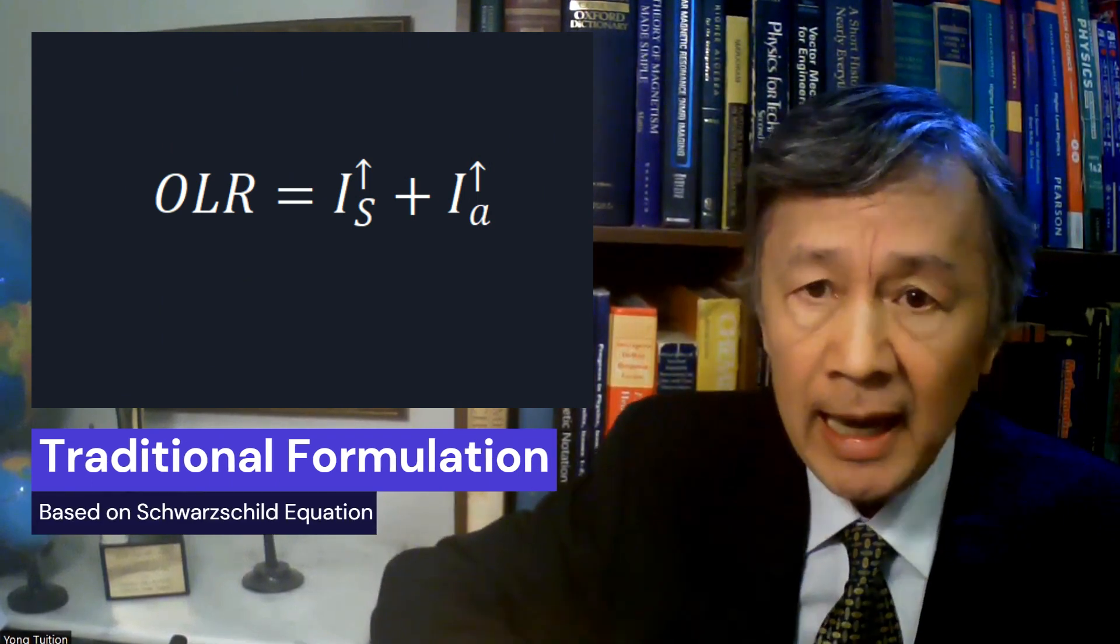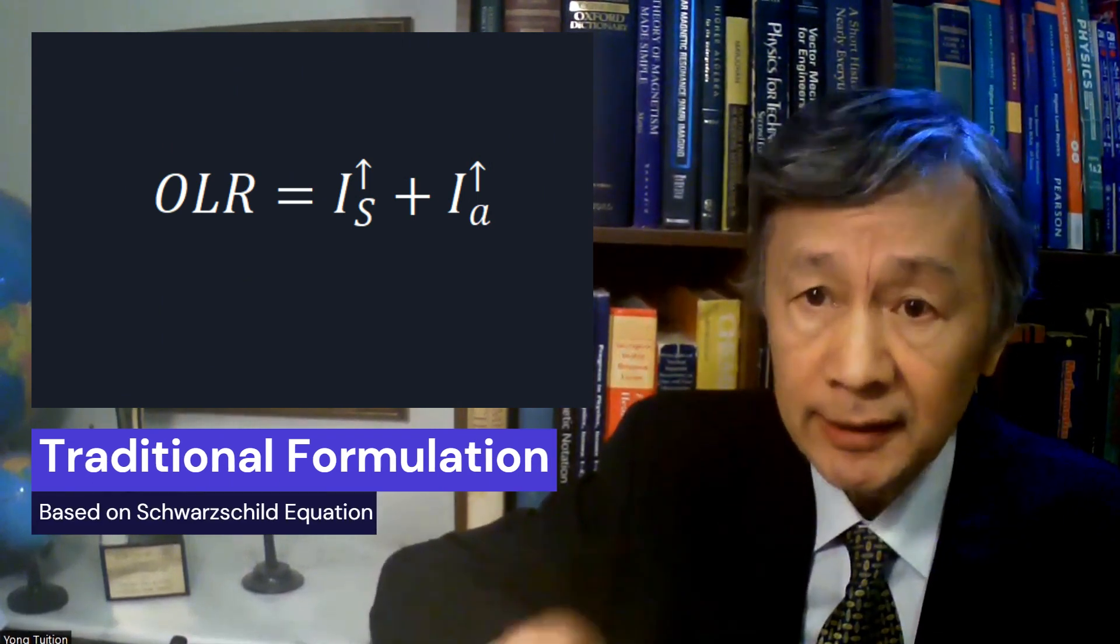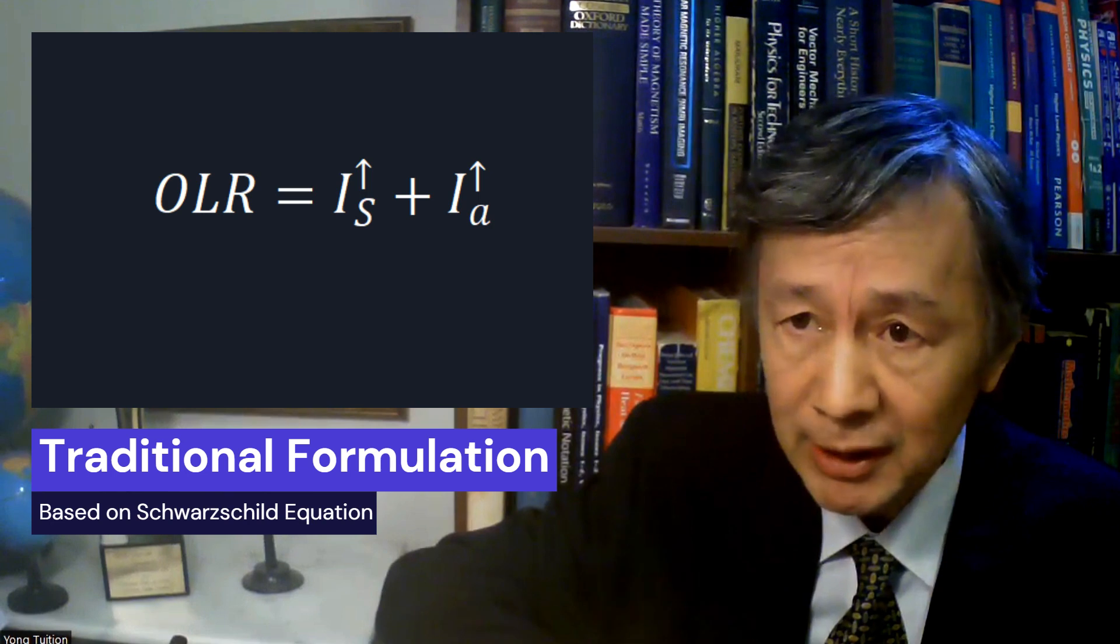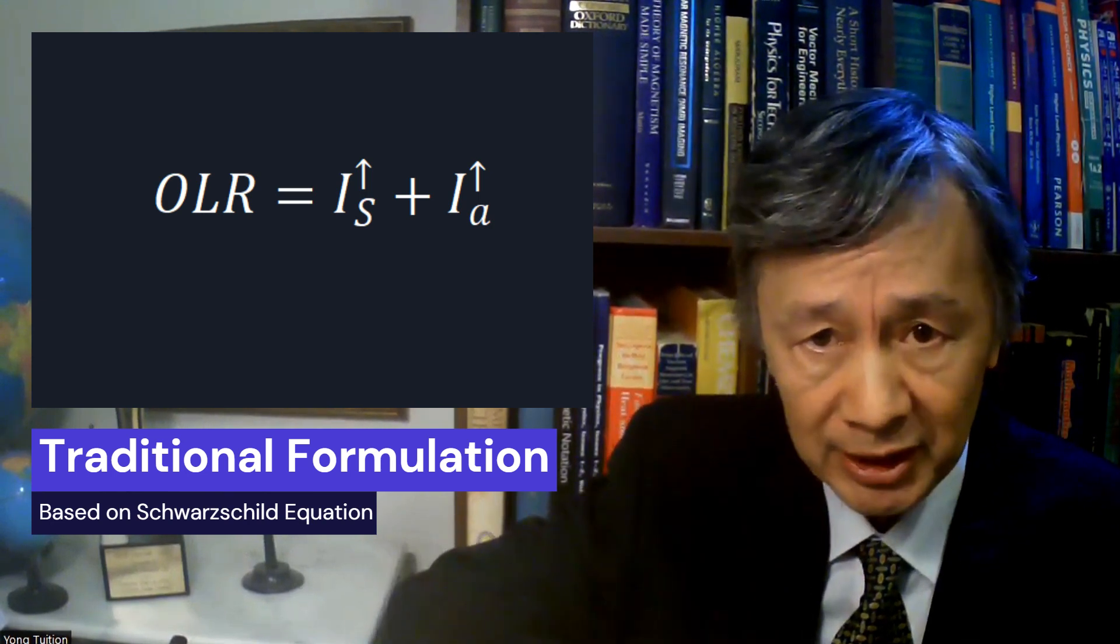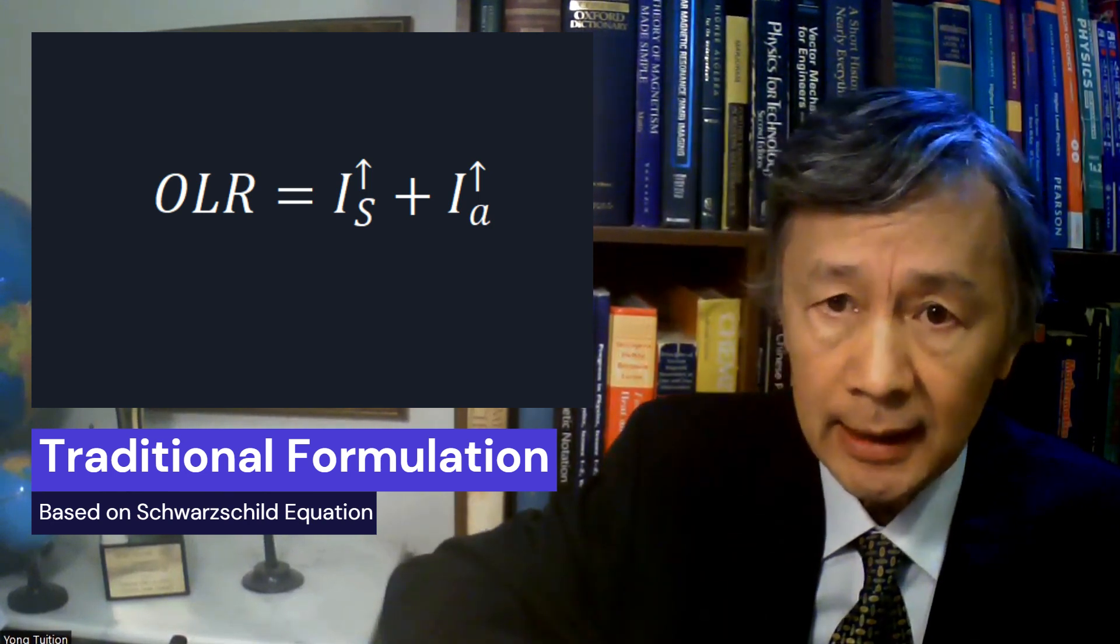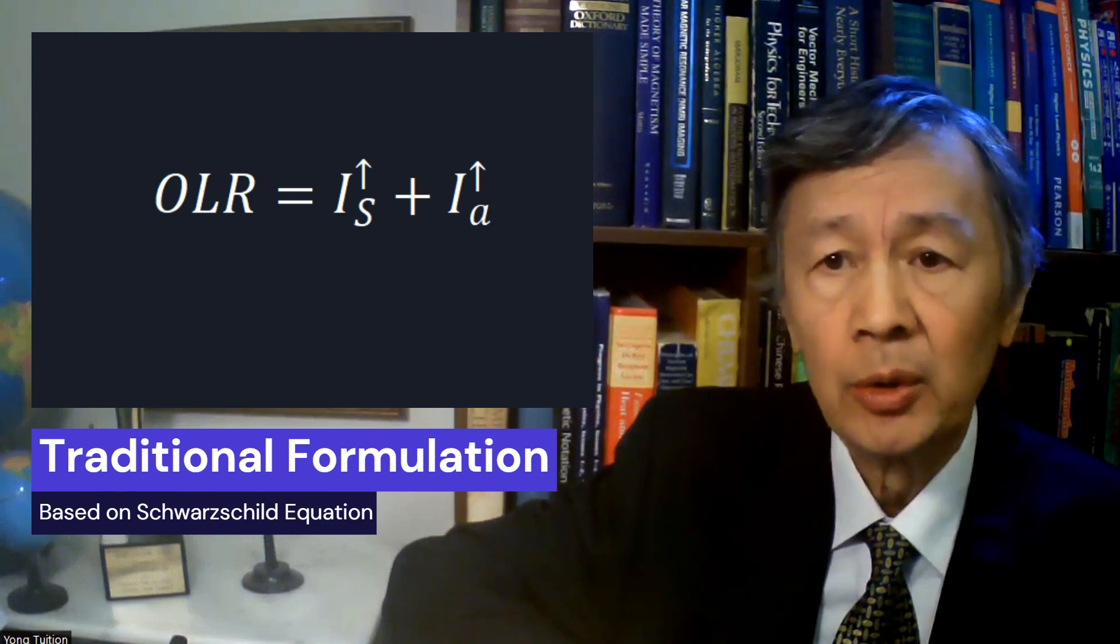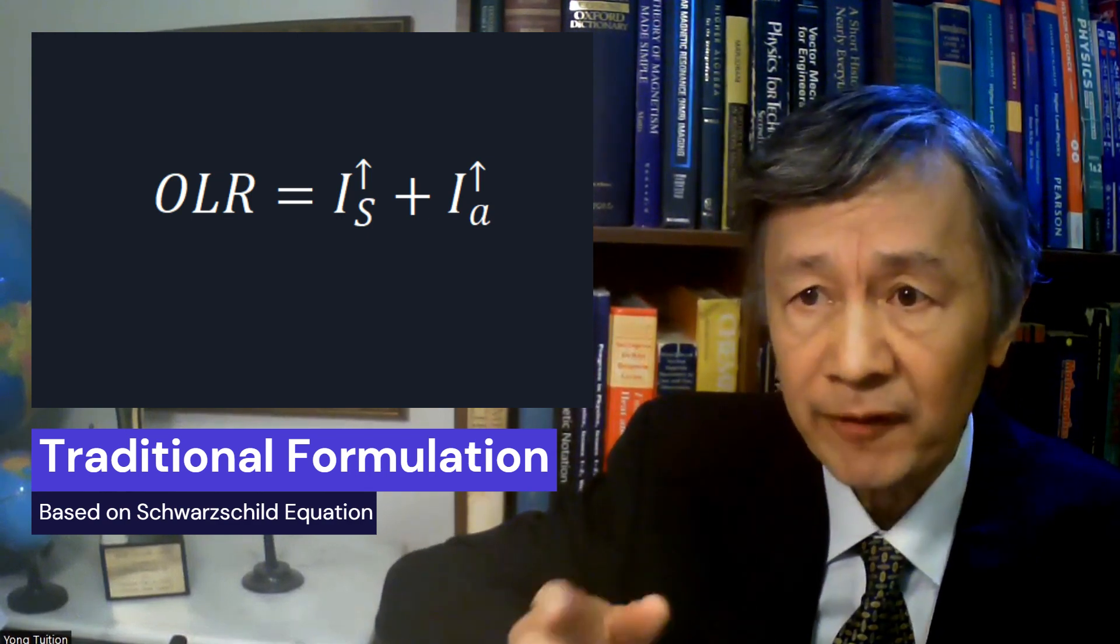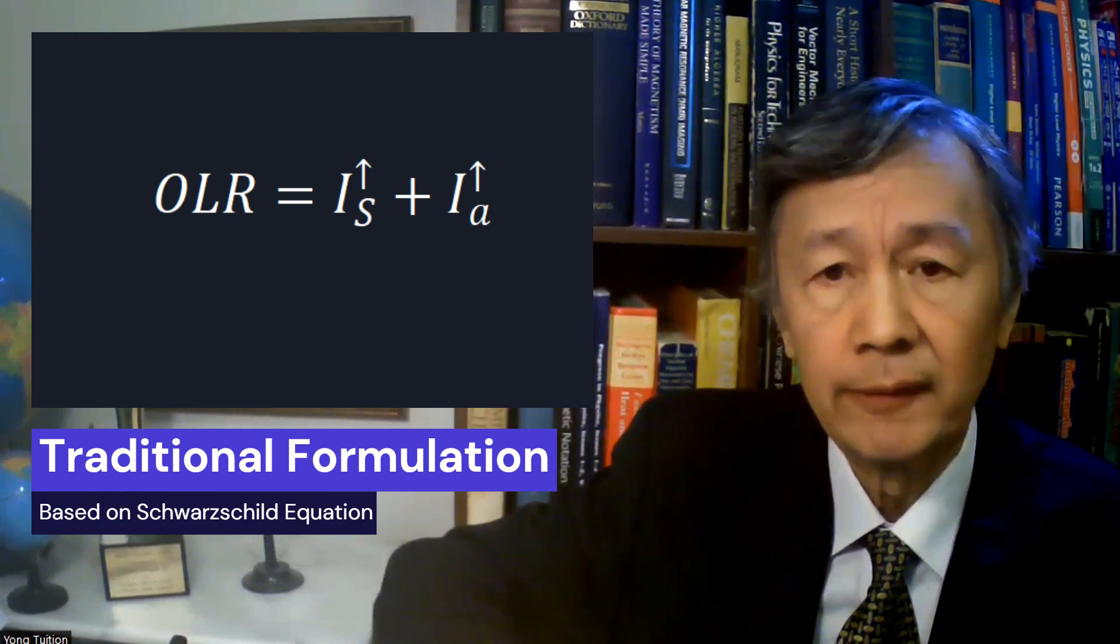So far, the outgoing infrared radiation, known as OLR for all climate researchers, has been formulated as the sum of the transmitted surface infrared radiation and the upward infrared radiation by the atmosphere at the top of the atmosphere. In doing so, however, an important fact was ignored,